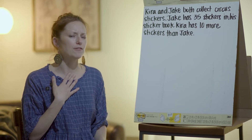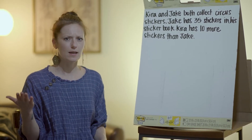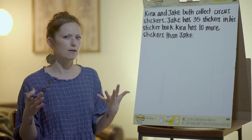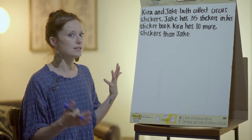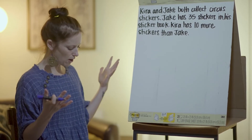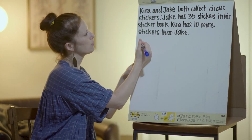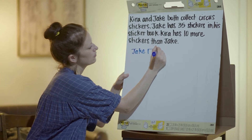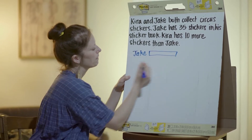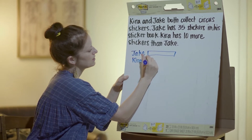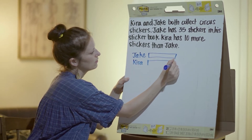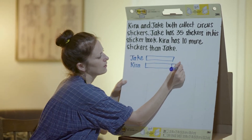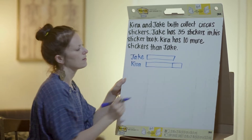Sometimes I find it helpful for my brain to draw things out, so that what I see on the paper is the same thing that I see in my brain. I'm going to draw a little bar graph here to represent the sticker collection. We know that Jake and Kira both have circus stickers, so we'll write Jake here and create a little bar for him. And we know that Kira also has some stickers, so we'll create a little bar for her — but we know that Kira has more stickers than Jake, so we're going to add on to her bar.